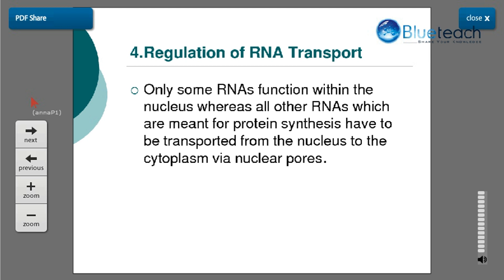At the stage of transcription, expression is controlled by various promoters, enhancers, and transcription factors, as well as by RNA processing steps. Coming to the next stage — regulation of RNA transport — only those RNAs which ultimately lead to the production of proteins are transmitted out through the nuclear pores into the cytoplasm. There they meet the ribosomes and protein synthesis starts. RNAs which do not lead to protein synthesis are stopped within the nucleus. This is another step where gene expression is controlled.